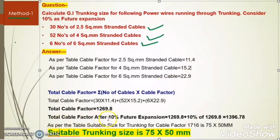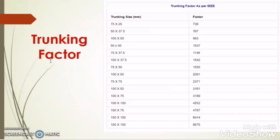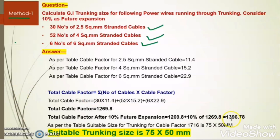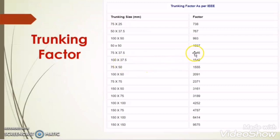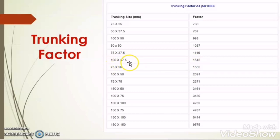As per the question, we have to take 10% as future expansion, so we add 10% to this value. After calculating, the total cable factor is 1396.78. This factor we have to compare with the trunking factor and select the trunking factor which is greater than our calculated factor. The next value is 1542, so we can select the trunking size as 100 x 100 x 37.5.